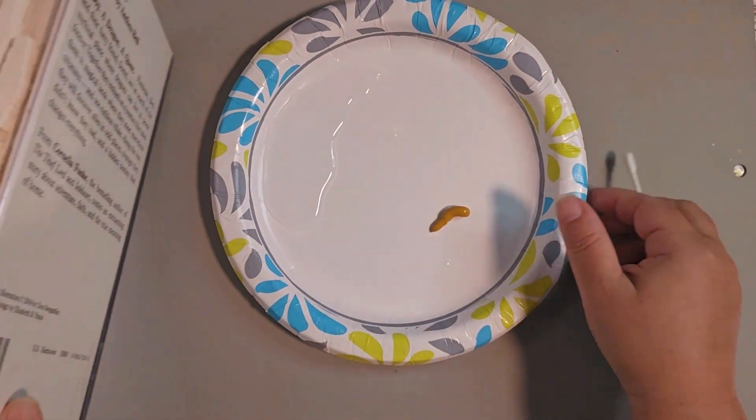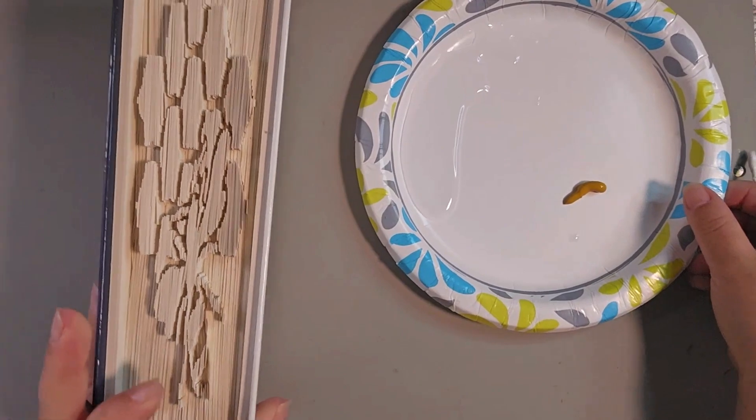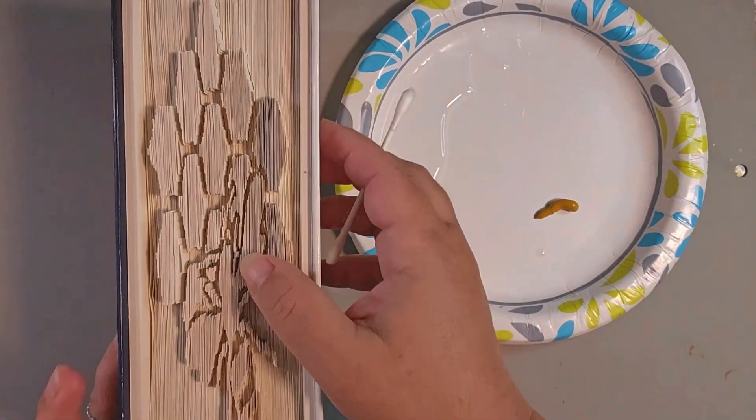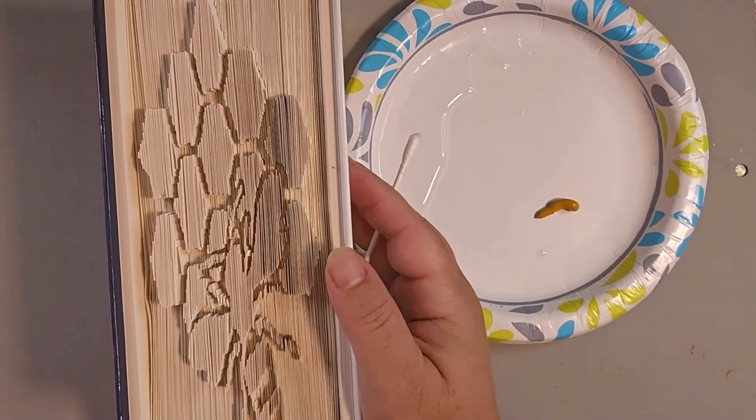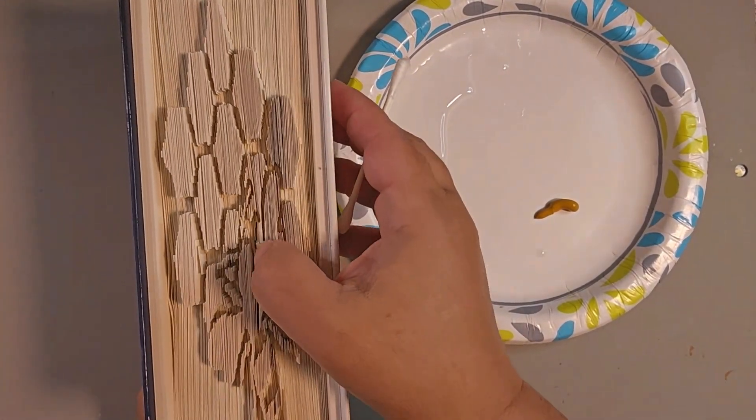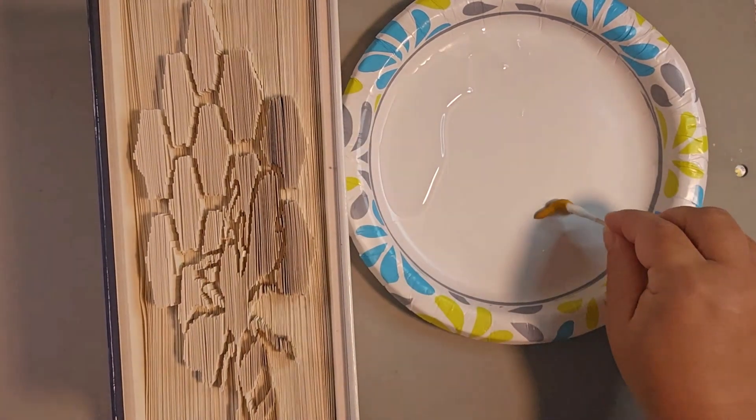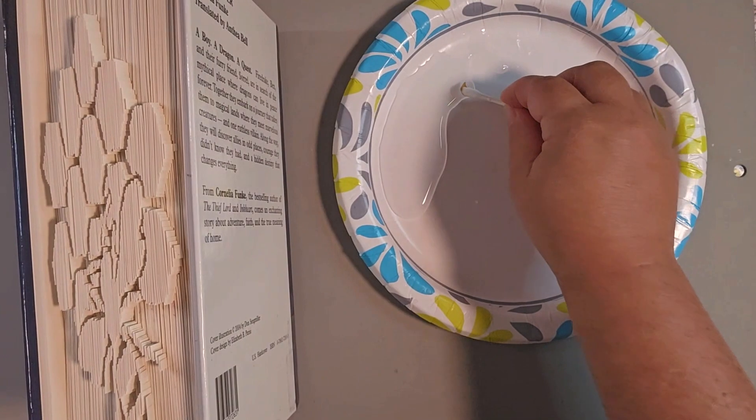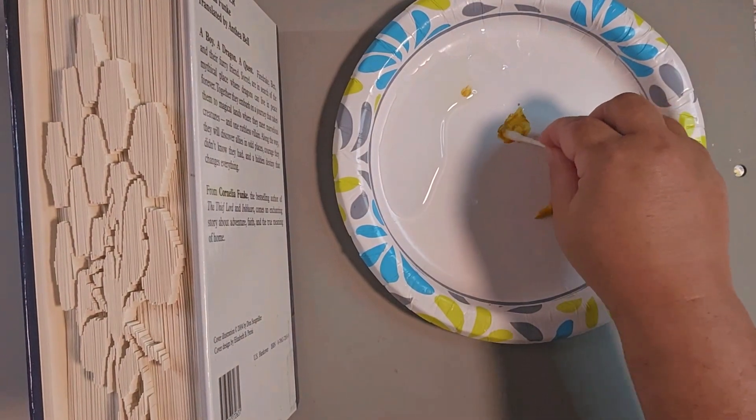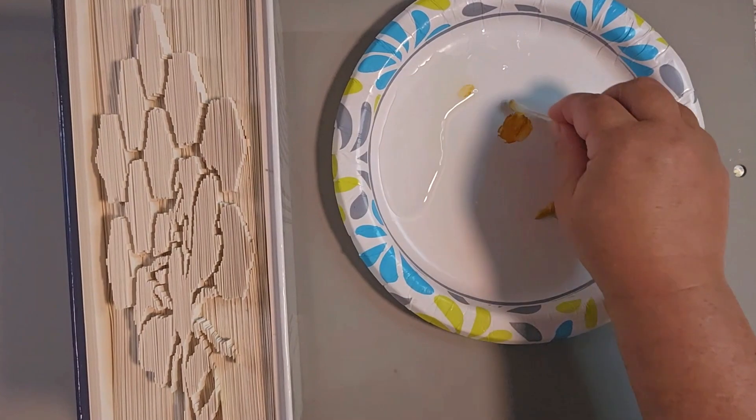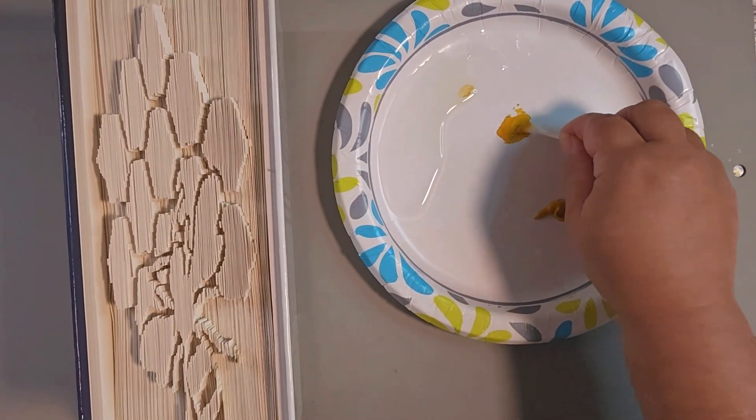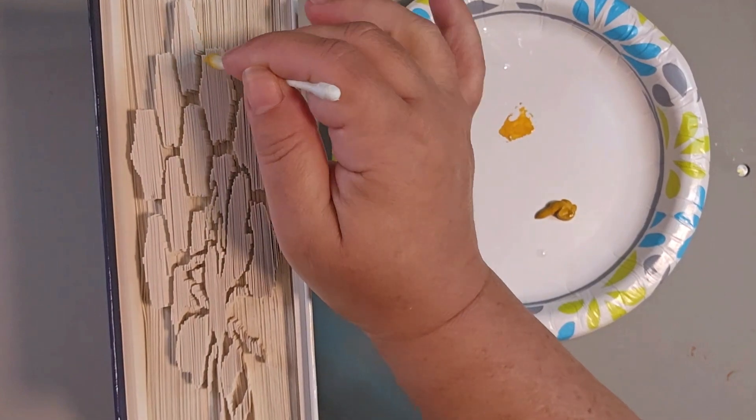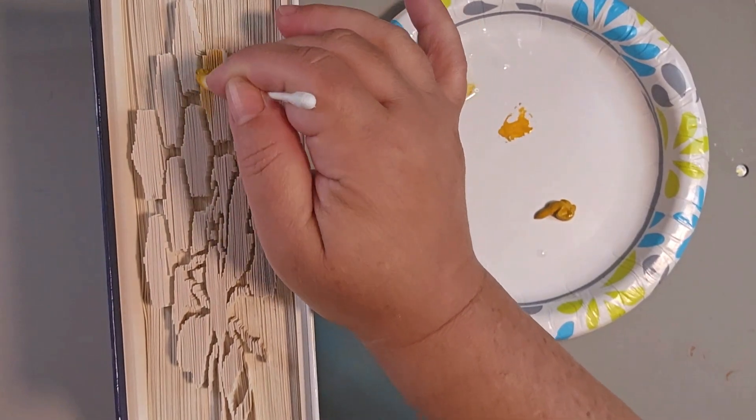I'm just going to use a Q-tip because I think the cotton is going to be easier than a paintbrush. But again, totally up to you. I'm going to hold the book not tight, but also not too loose. I'm going to mix this acrylic paint with a little bit of water. And then very carefully, as you can see, it just goes on real nice.